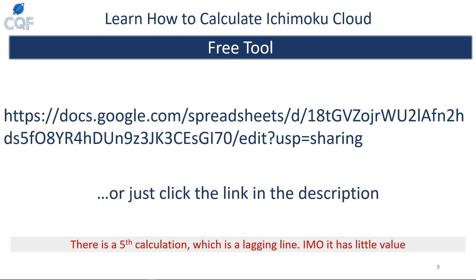Now let's jump into actually calculating the Ichimoku. I have a free tool — the link will be in the description. I also want to mention that Ichimoku pros would recognize there is a fifth calculation: the lagging line. I don't think it adds much value, so I didn't cover it — but I didn't want to get called out for omitting it. Now let's jump into the free tool.